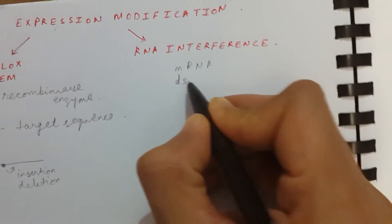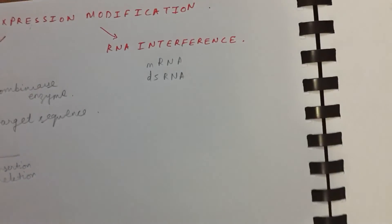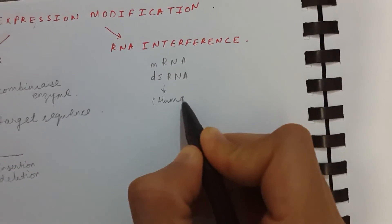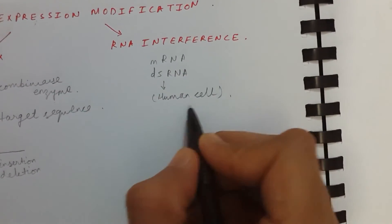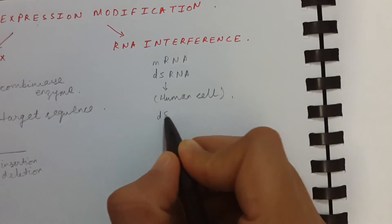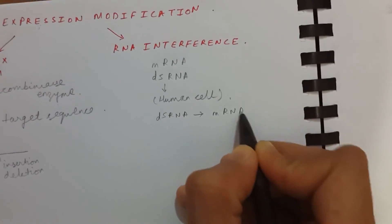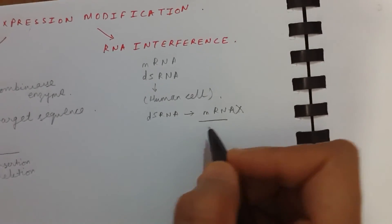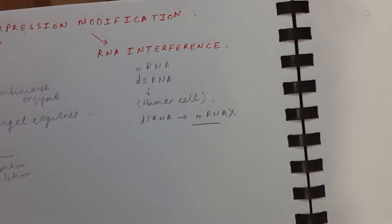In RNA interference, we take mRNA and from it make double-stranded RNA. We insert this double-stranded RNA into a human cell. After entering the cell, the strands separate into single-stranded RNA, and these strands destroy the mRNA present in the cell. As this mRNA is destroyed, gene expression is slowed down — this is called knocking down — so we are decreasing gene expression.